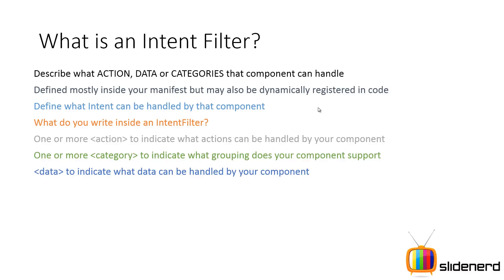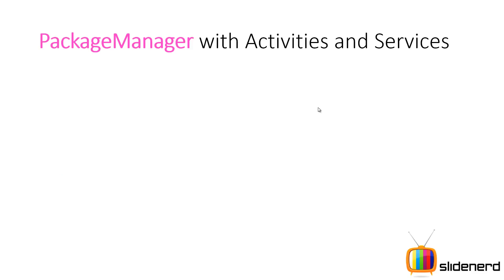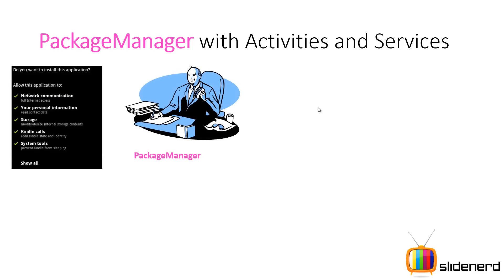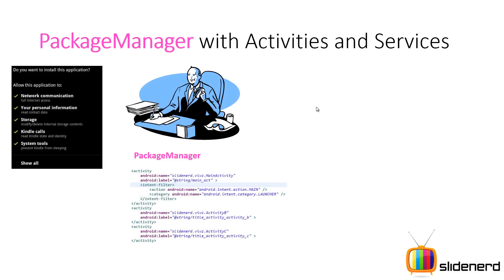Matching for action, category, and data is different. We'll talk about how each is matched in detail in upcoming videos. For now, remember that some sort of matching occurs between the intent sent by the user and the activity about to be called. When you install an app, the package manager reads its intent filters and records what actions, categories, and data each activity can handle.